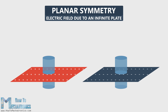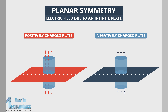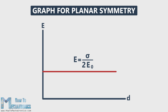If the plate is positively charged, the electric field would be pointing outward, and if it is negatively charged, the electric field will be pointing inwards. If we draw a graph with the distance d on the x-axis and the electric field on the y-axis, we can notice that the electric field has a constant value of sigma over two epsilon naught, and it doesn't depend on the distance from the plane.